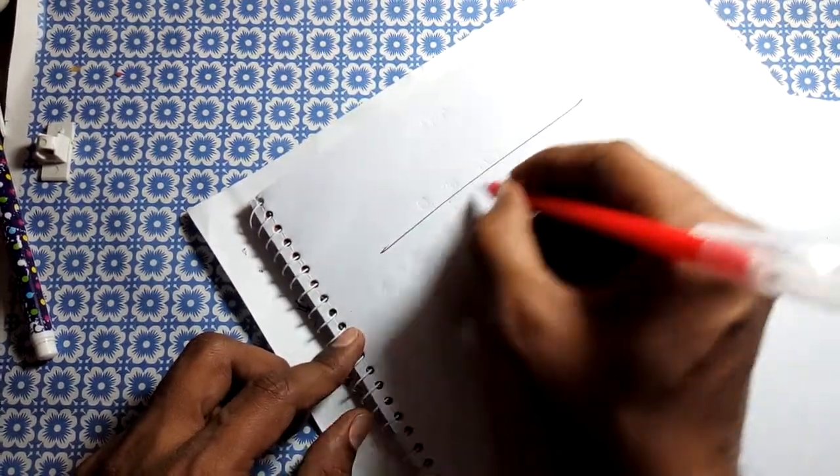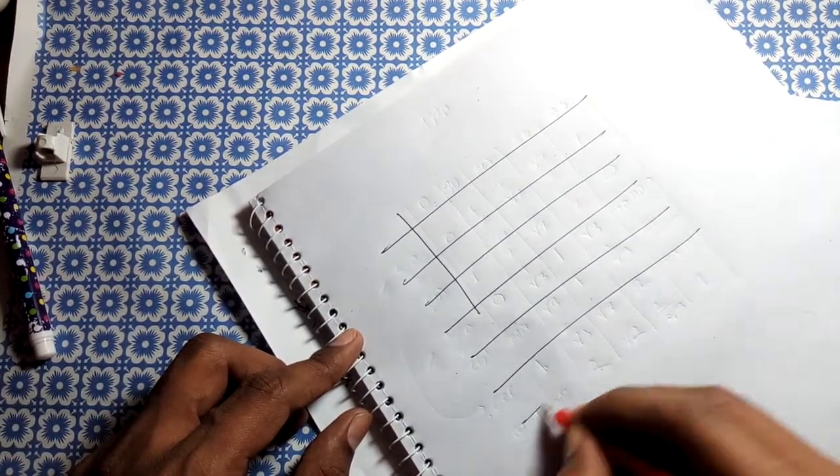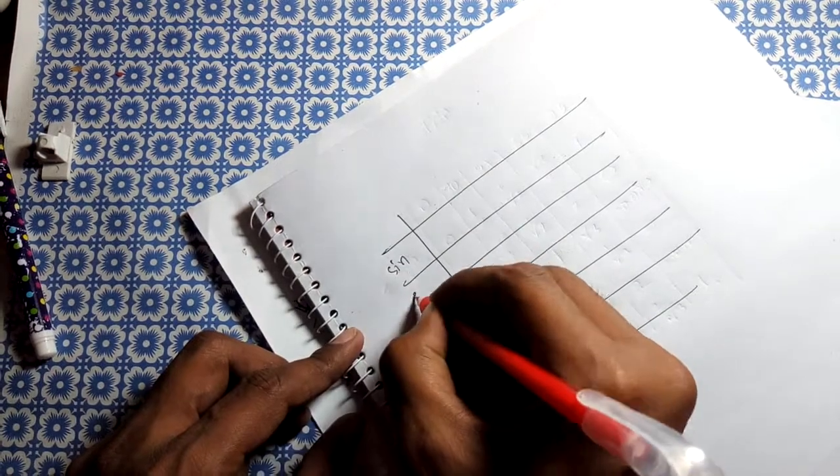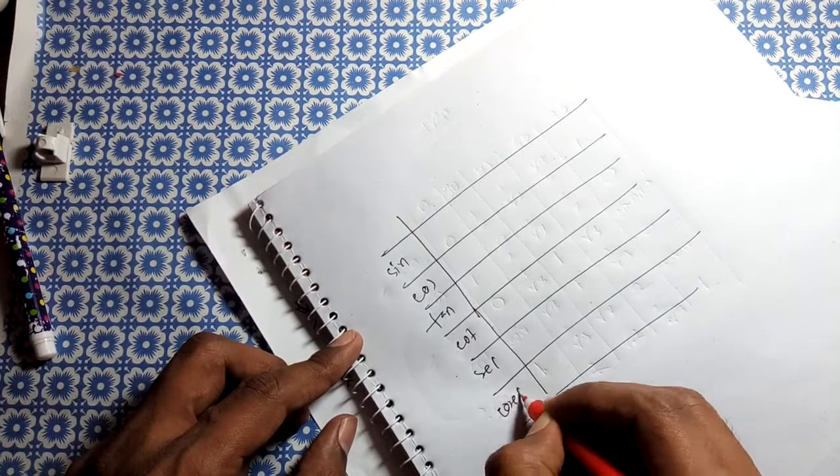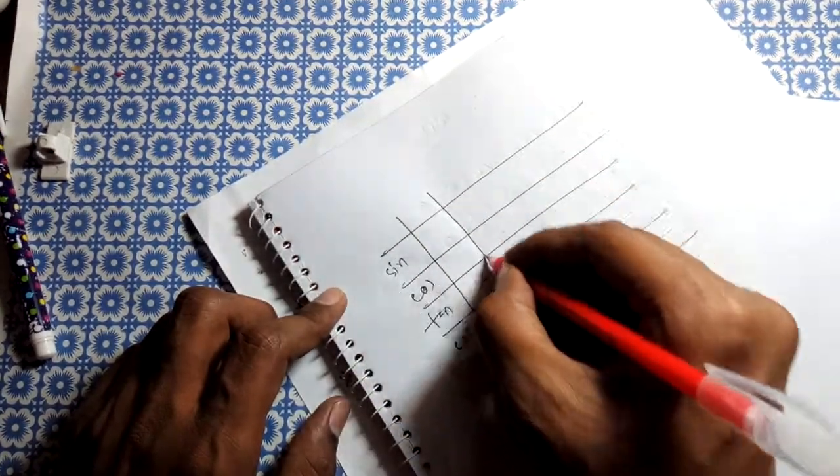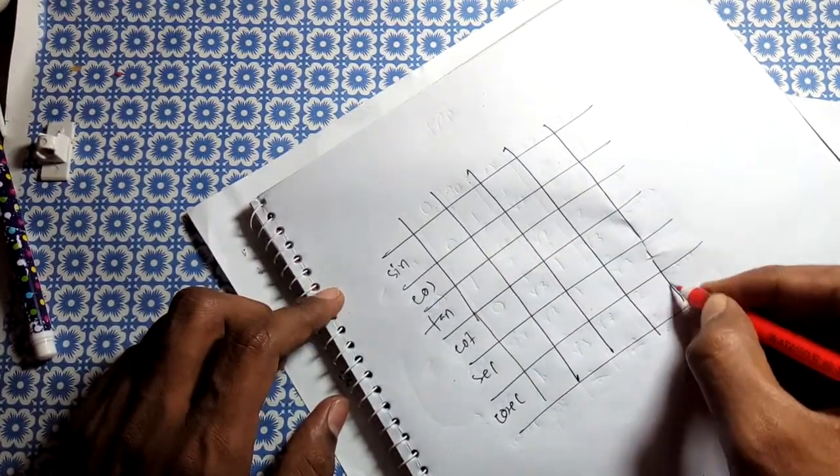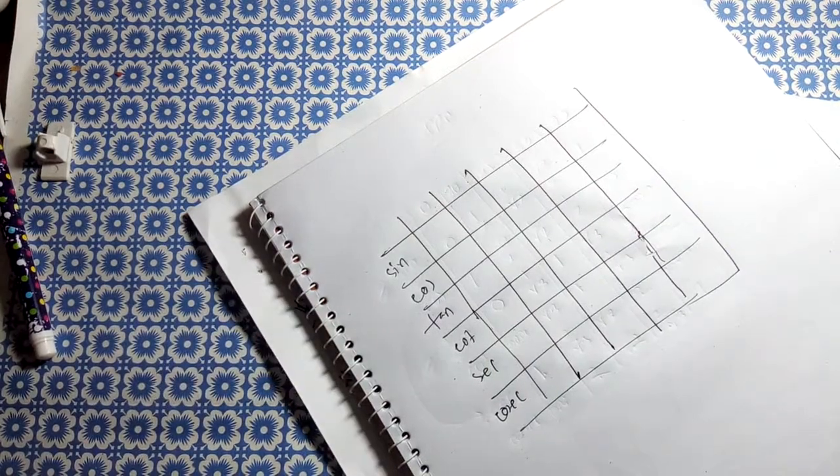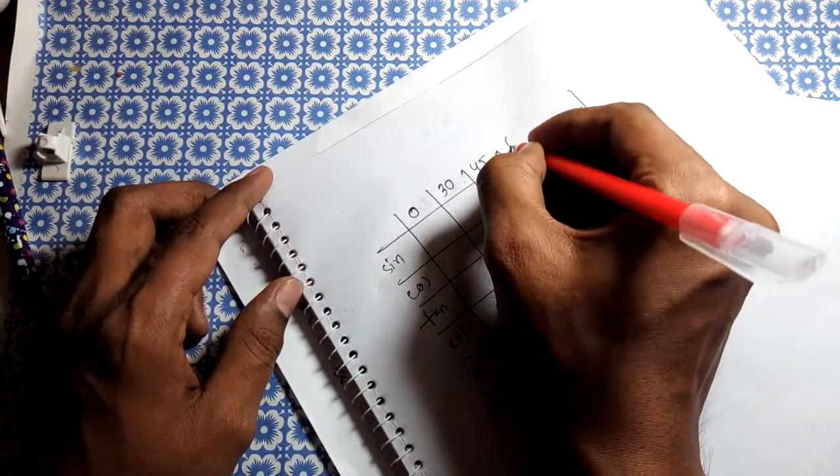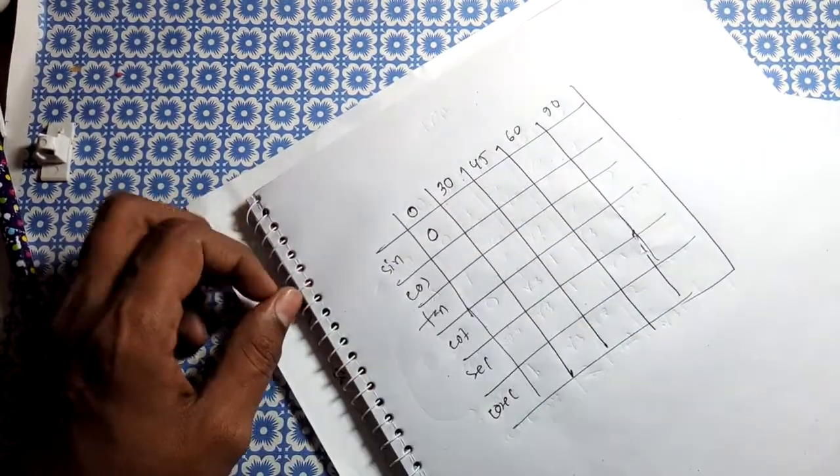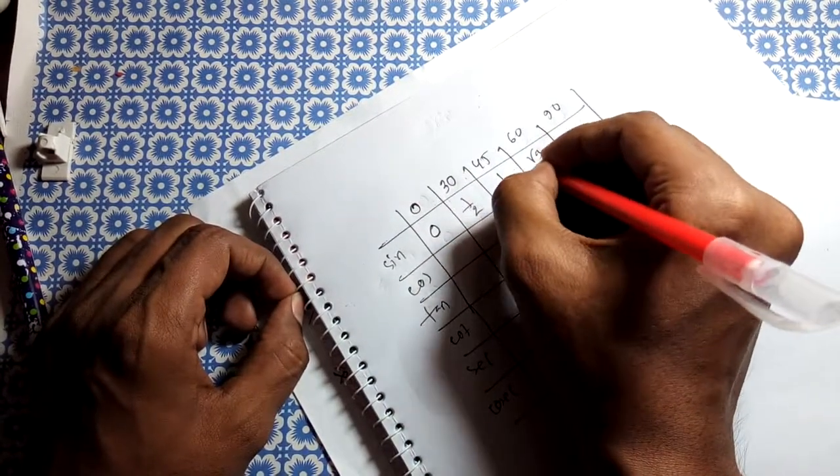Let me review all six functions together: sin, cos, tan, cot, sec, and cosec. I'll explain each one systematically. For sin theta, the values are 0, 1/2, 1 by root 2, root 3 by 2, and 1.